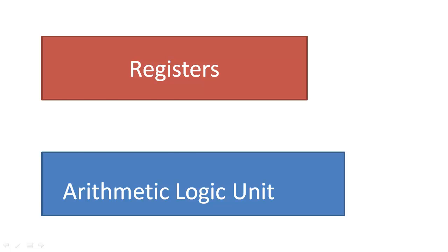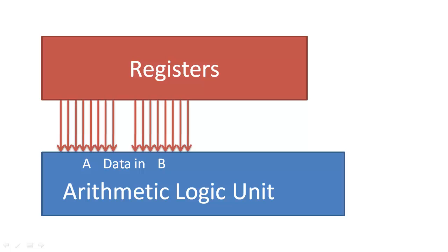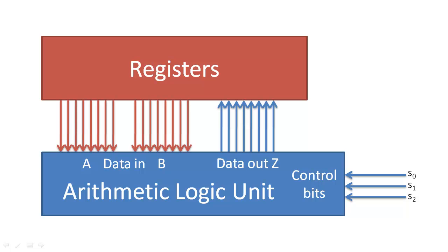The ALU operates by receiving data from the registers, and the control bits indicate what operation to perform on this information. The result of the selected operation is sent back to the registers.